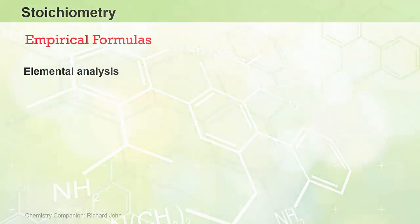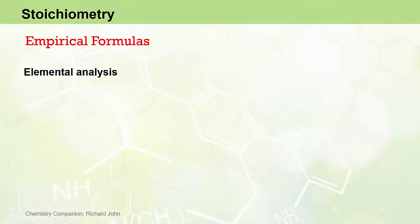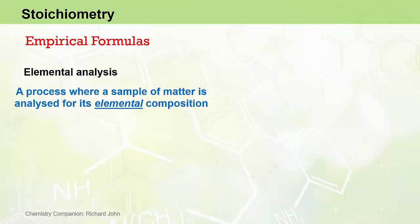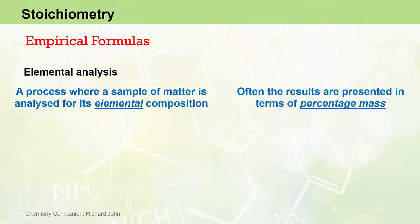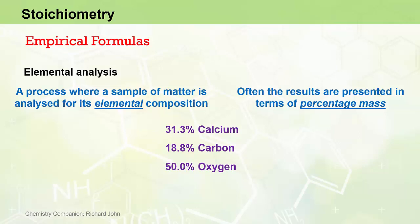If we had a sample of matter containing a compound whose identity we didn't know, we could send the sample off to an analytical laboratory for elemental analysis. Elemental analysis is a process whereby a sample of matter is analysed for its elemental composition, and often the results come back to us in terms of mass percentage of each element. For example, a compound containing calcium, carbon and oxygen could come back with results showing 31.3% calcium, 18.8% carbon and 50.0% oxygen.